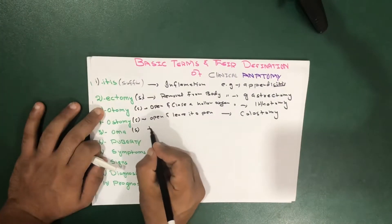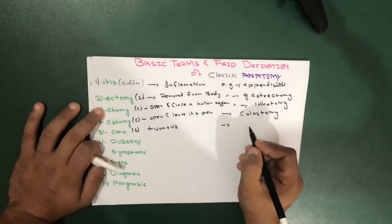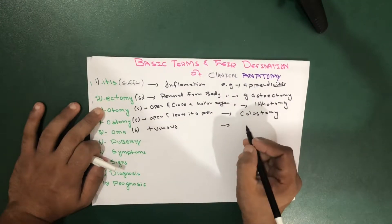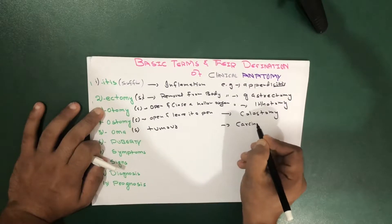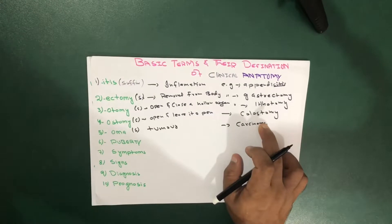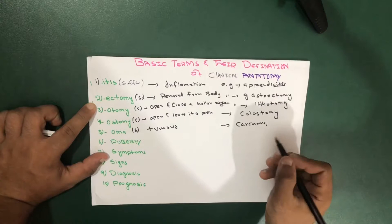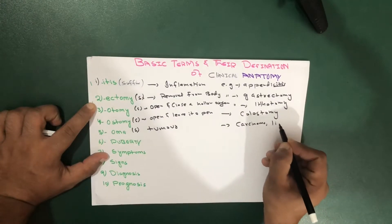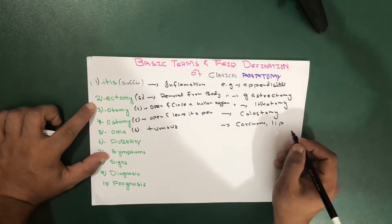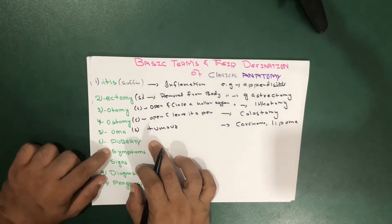Another suffix is '-oma', which means a tumor. For example, carcinoma. You can also add examples like hemangioma, neurofibroma, lipoma, and osteoma — any of these could be added as examples.